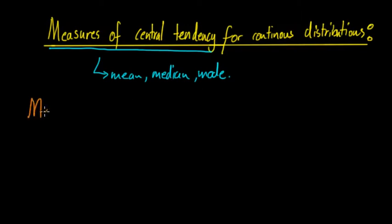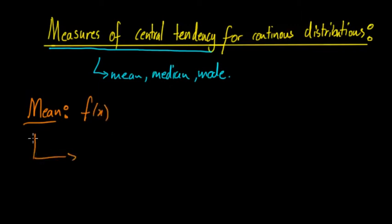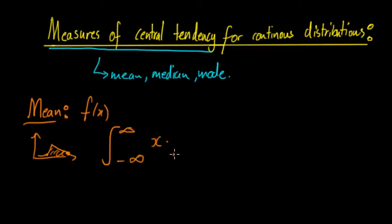So firstly, the mean — how do we calculate that? Well, assuming we have a probability density function f(x), you calculate it by integrating from negative infinity to infinity of x times f(x) dx. This is for when the graph spans all x values.